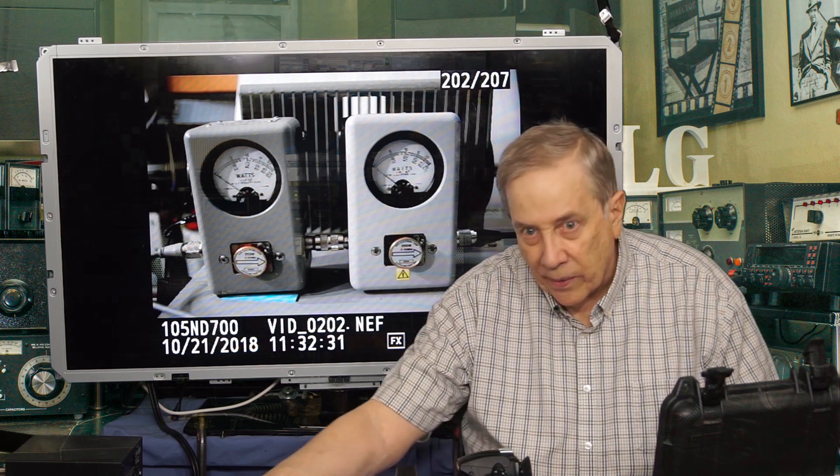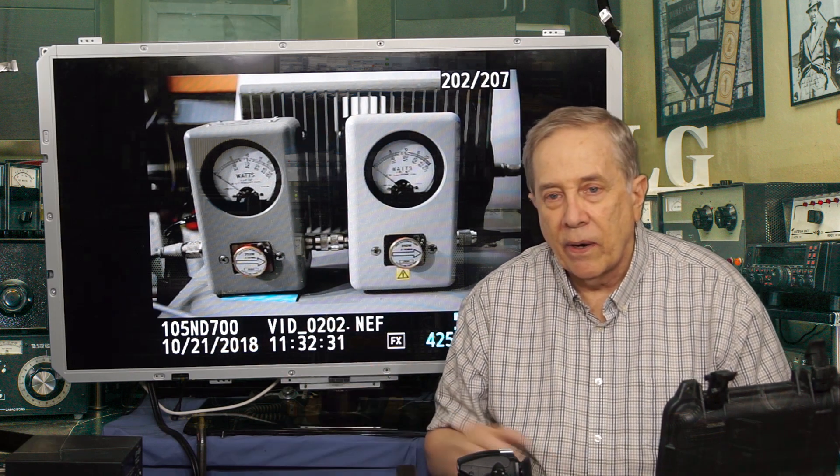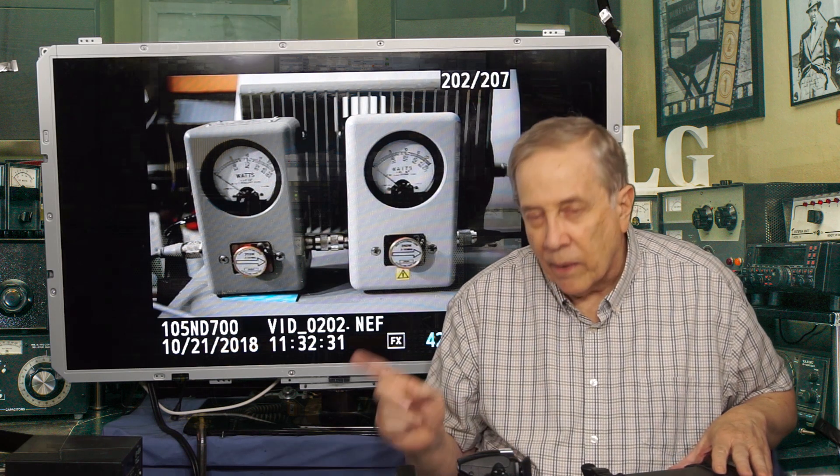So I've got a transceiver set up, a coax cable, through the two watt meters, through another watt meter that's sitting on top that's not pictured, and into the end thing is a bird dummy load. The bird dummy load is good for 500 watts for like a half an hour. So I've got a camera going, and we'll put 100 watts into it and see what happens.